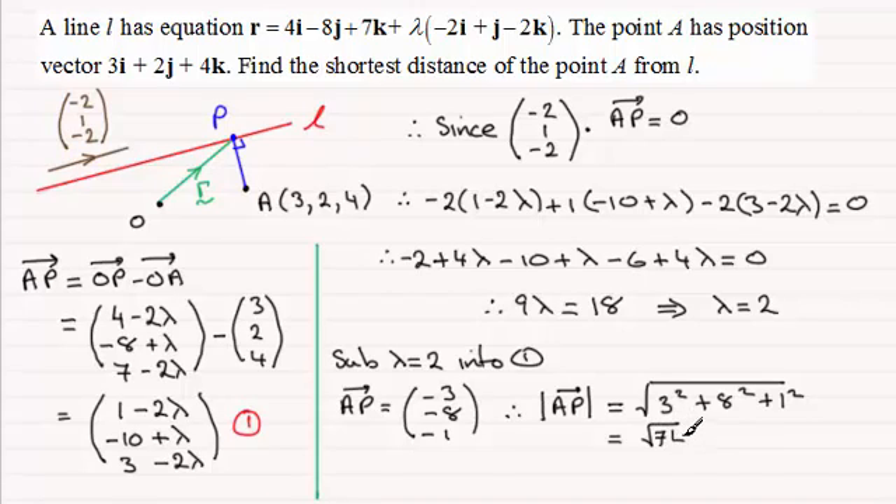So from this, we can get the magnitude of the vector A P. And that will give us our shortest distance. And in the usual way, this will be the square root of the sum of the squares of the components. So we don't need the negatives in. We've just got 3 squared plus 8 squared plus the 1 squared. And this comes out at root 74. And because it's a length, I'm just going to write units there. Root 74 units is that shortest distance.